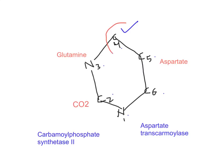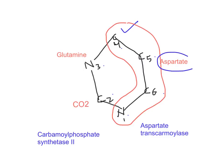Note that carbon 4, carbon 5, carbon 6, and nitrogen 1 are all derived from aspartate — almost the entire aspartate molecule is used to make the pyrimidine ring, except the carboxyl group. Carbon 2 of the pyrimidine ring is given by carbon dioxide, and nitrogen 3 is given by glutamine. So out of six atoms, four are donated by aspartate, one (C2) by CO2, and one (N3) by glutamine.